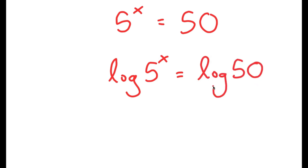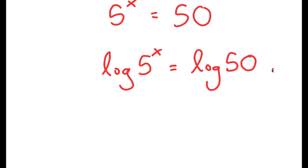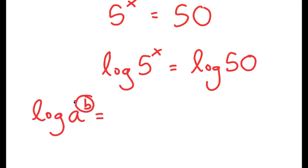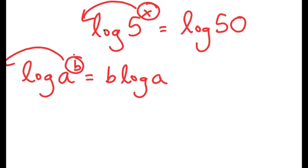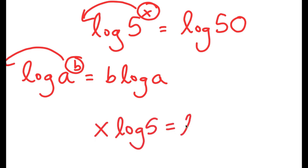The reason I'm doing this is because logarithms come with a special property that states that if I have something in the form log a to the power of b, I can actually move the exponent b to the front, so this turns into b times log a. So in this case, I have log 5 to the power of x, and I can move this x to the front. So now I get x times log 5 is equal to log 50.